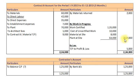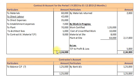Total Rs. 2,17,000. By closing Contract B Account we get a balancing figure of Rs. 5,000 on Credit side. This is nothing but our Loss on Contract. In case of loss, nothing will be transferred to Reserve but the entire loss will be transferred to Profit and Loss Account, that is Rs. 5,000. Our Contract Account gets tally with Rs. 2,24,000.